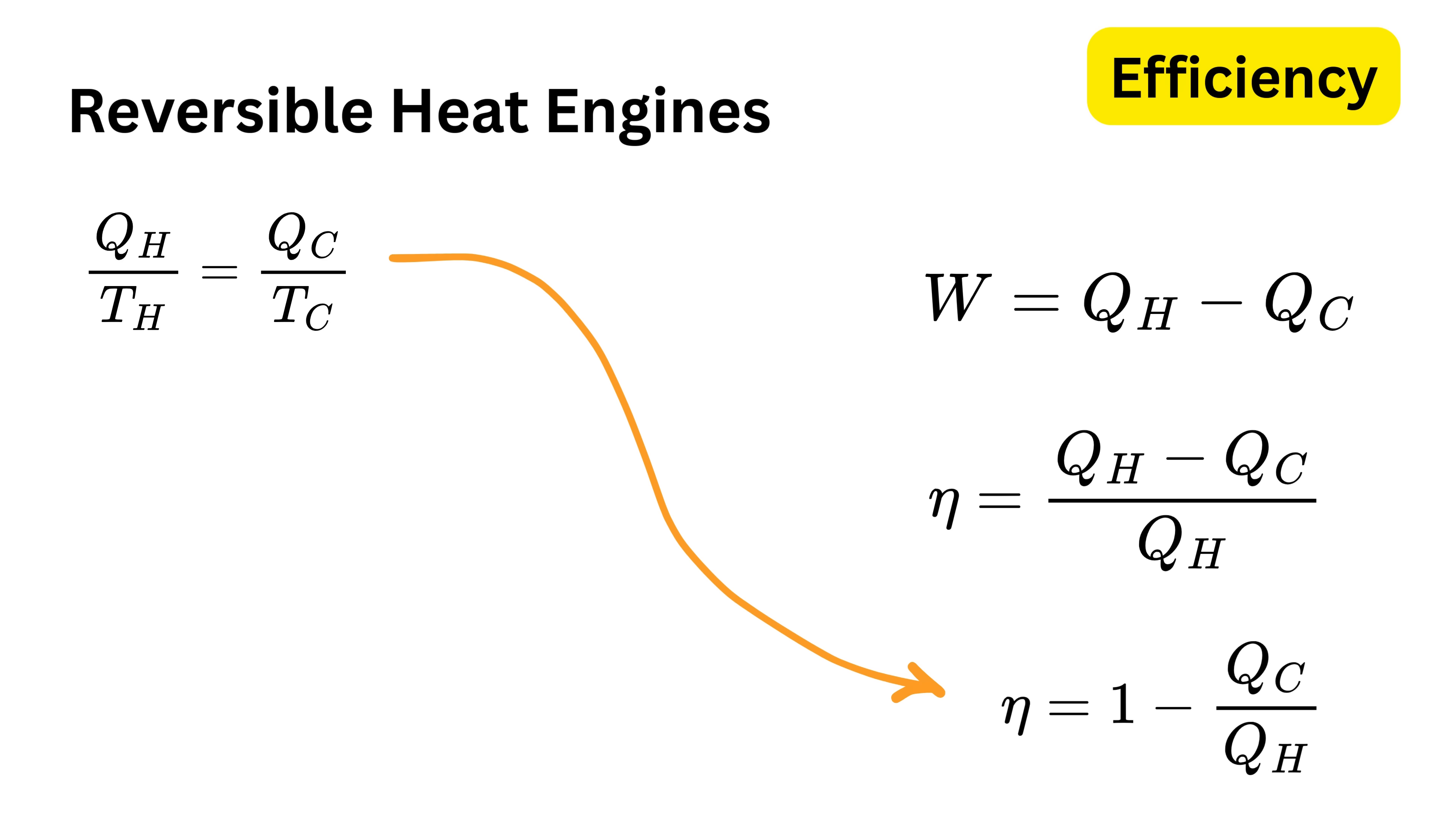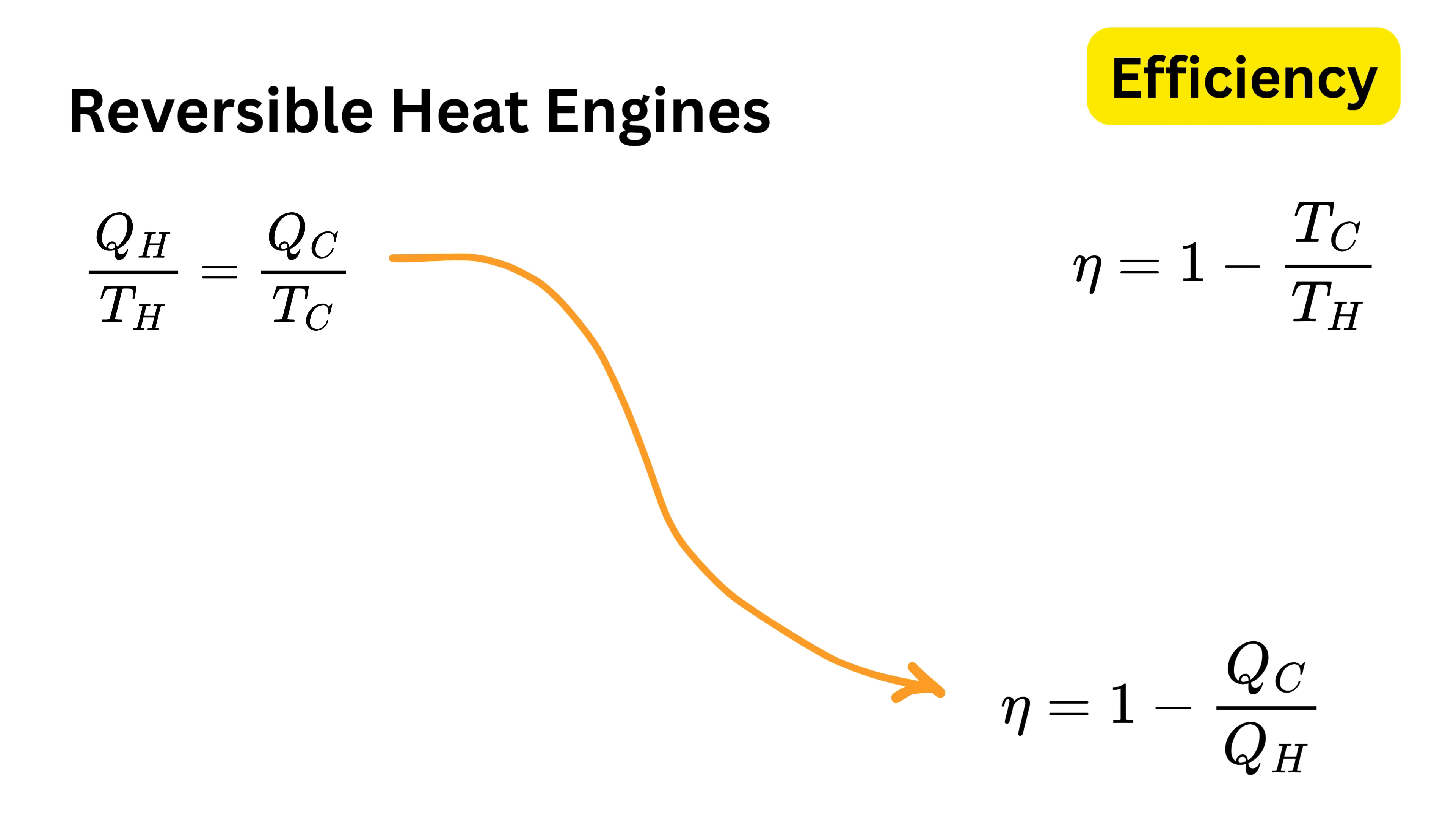When you substitute that into the efficiency expression, you get the famous result for efficiency, which equals 1 minus T_c divided by T_h. Remember that T_h and T_c must be measured on an absolute temperature scale, or Kelvin; otherwise the relation does not hold.